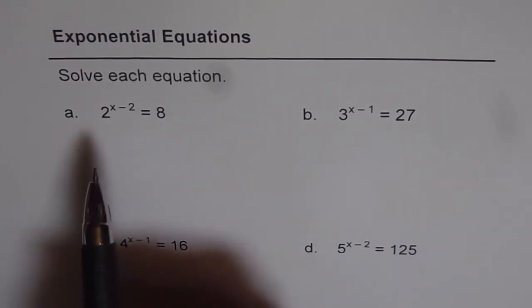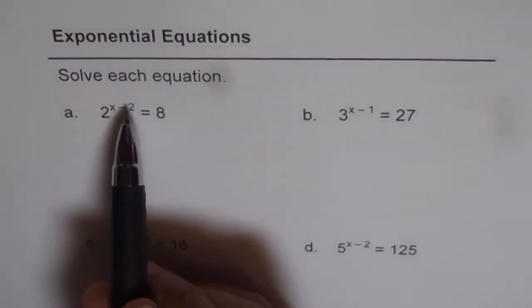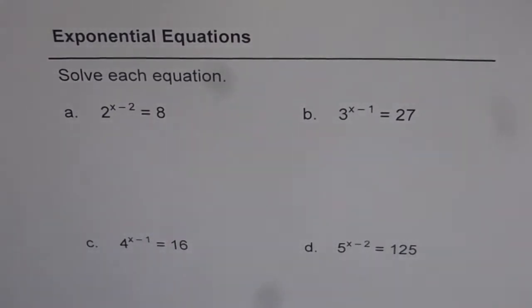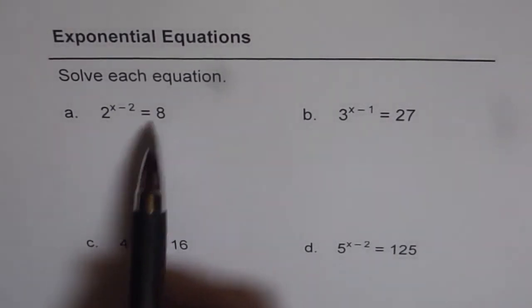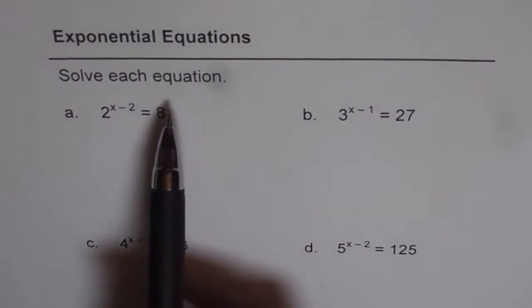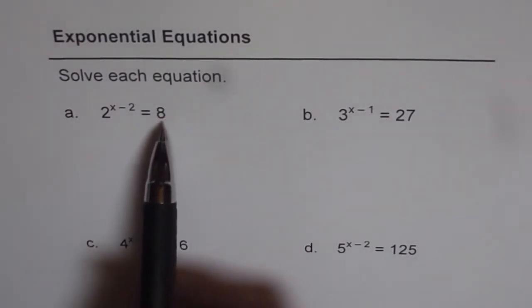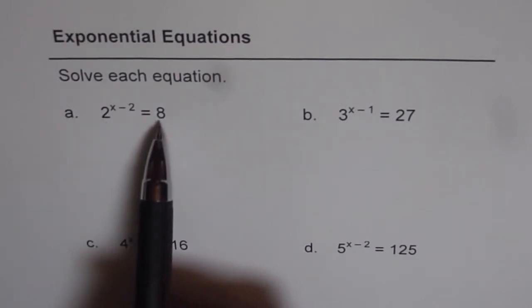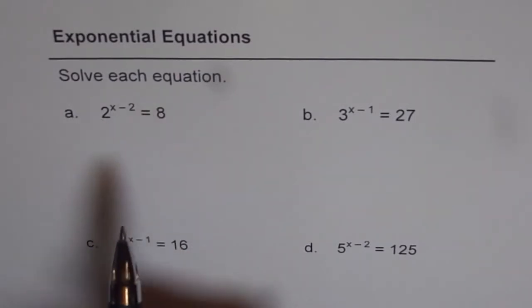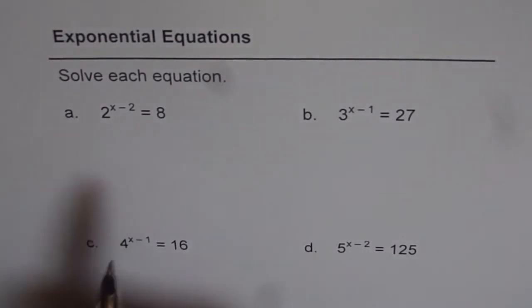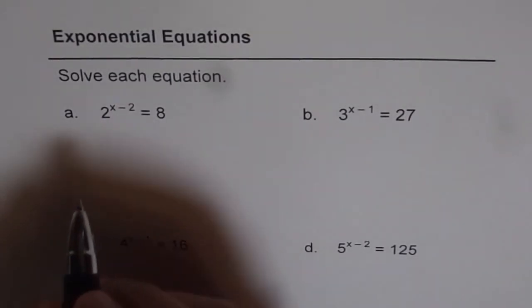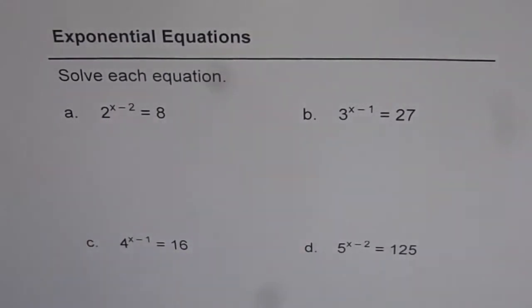The very first one is 2 to the power of x minus 2 equals 8. The idea here is to write the term on the right hand side with an exponent of something but same base as 2. So 8 we have to write as 2 to the power of something. If we can do that then the exponents can be equated and we can find the value of x. Now 2 to the power of 3 is 8.